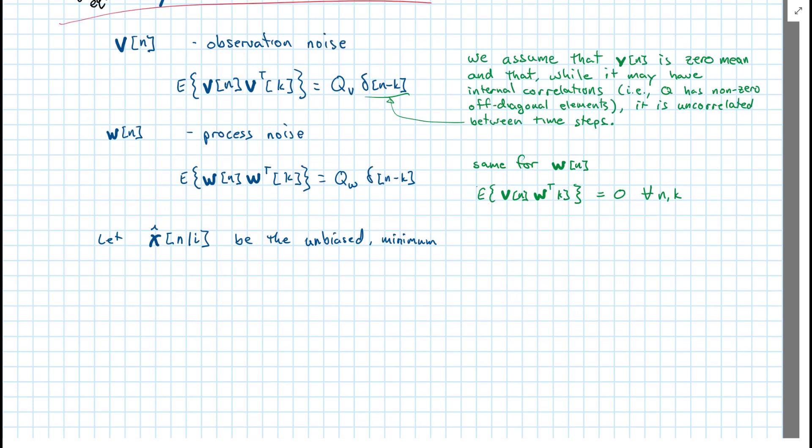Now let's talk about some notational things that will make developing the Kalman filter a little bit easier to follow. When we developed the RLS filter, we had the a priori error and the a posteriori error. The a priori error was the error due to filtering the current input with the previous weights. And the a posteriori error was the error due to filtering the current input with the updated weights, so the current weights.